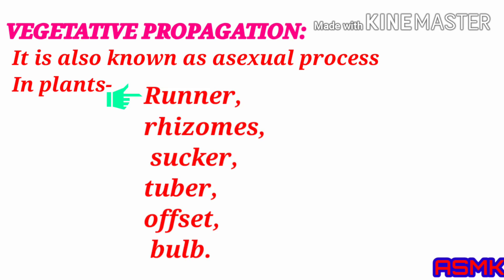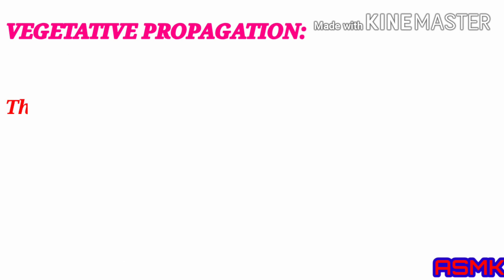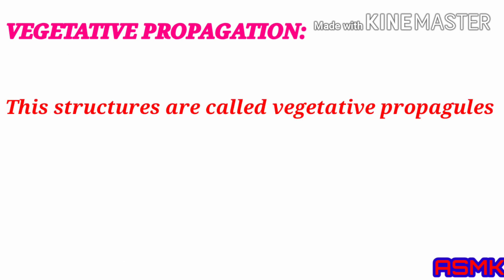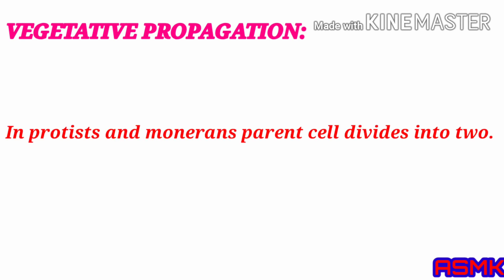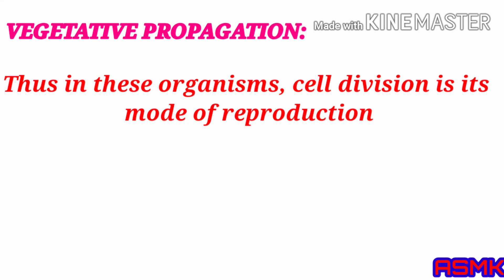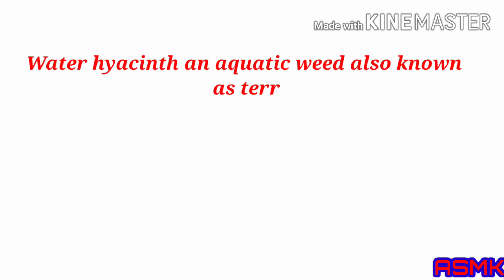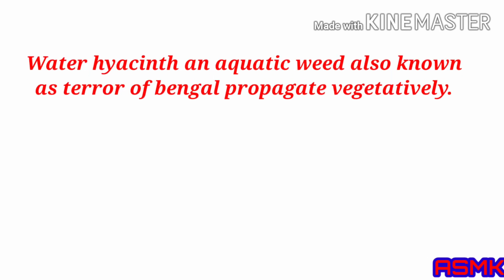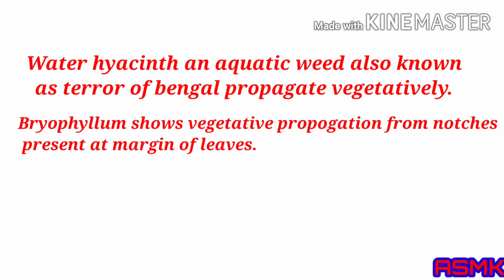Vegetative propagation is also known as an asexual process in plants. Structures such as runner, rhizome, sucker, tuber, offset, and bulb are called vegetative propagules. In protists and monera, the parent cell divides into two and gives new individuals, so cell division itself is their mode of reproduction. Water hyacinth, an aquatic weed also known as the terror of Bengal, propagates vegetatively.